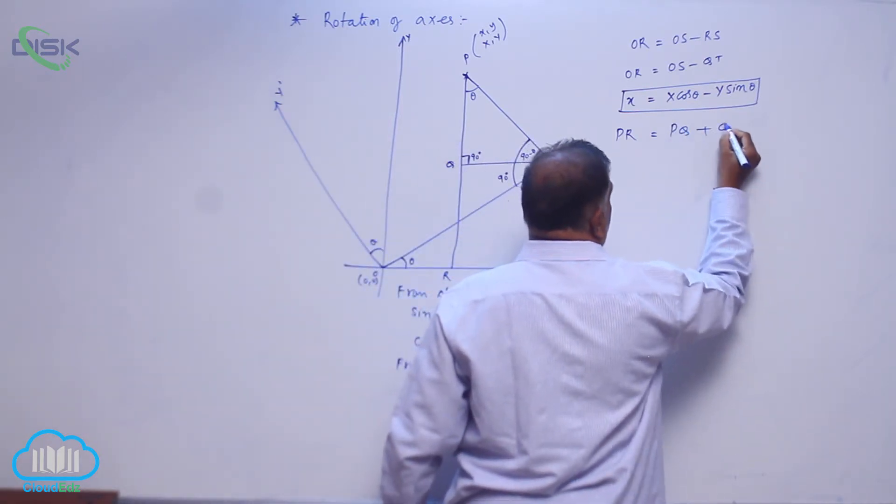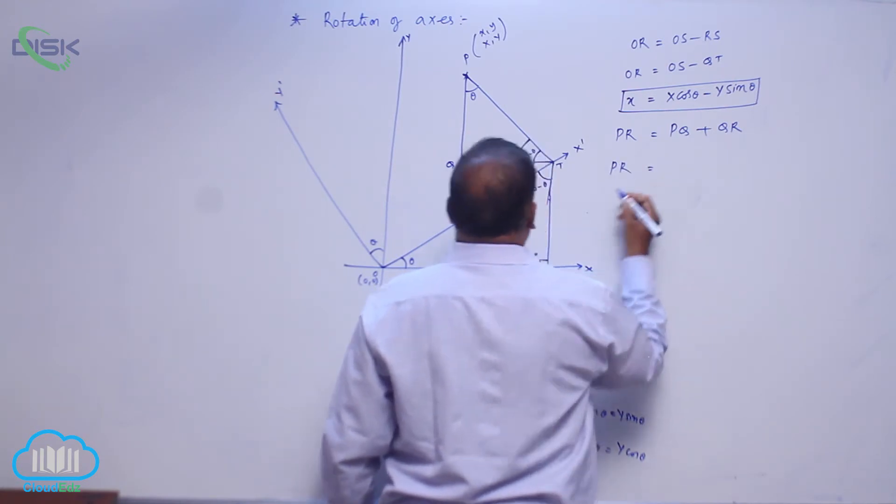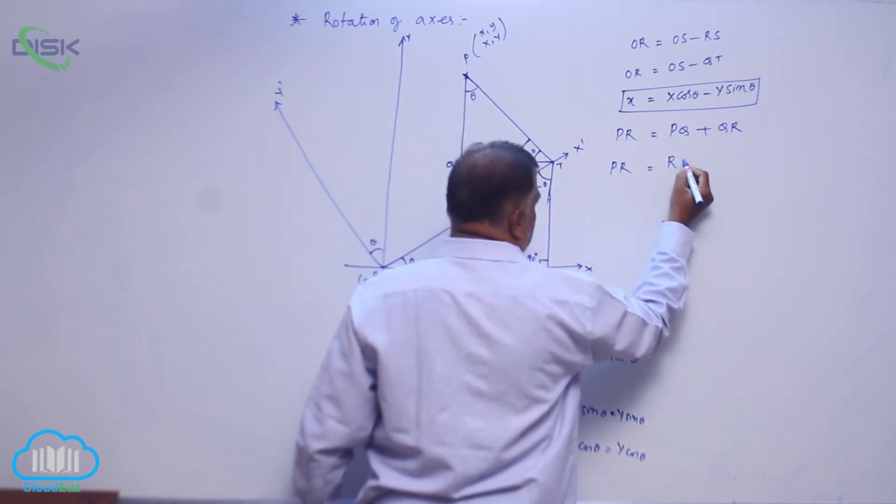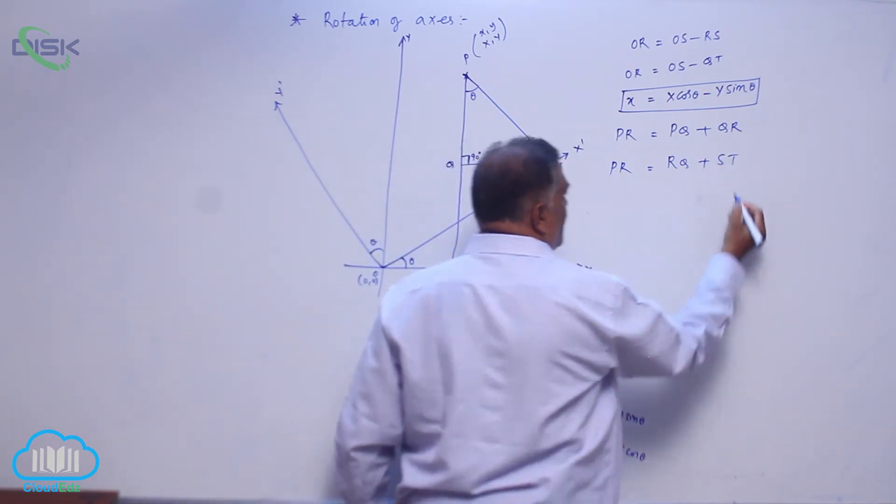This is PR equals PQ, keep it as it is. QR is nothing but TS or ST you can write.